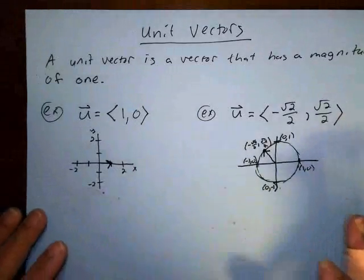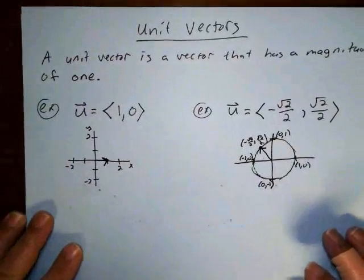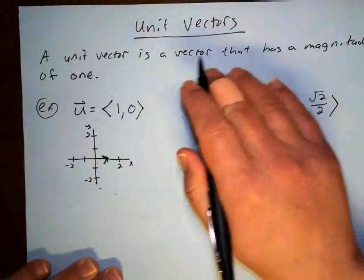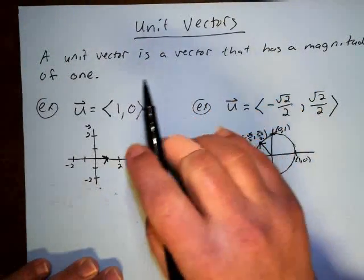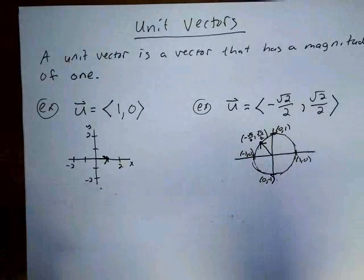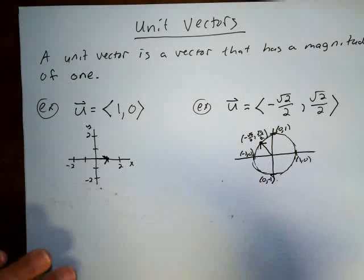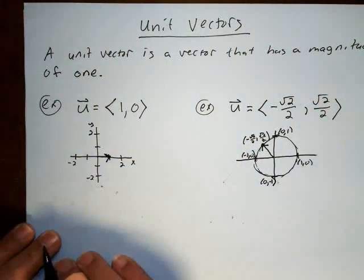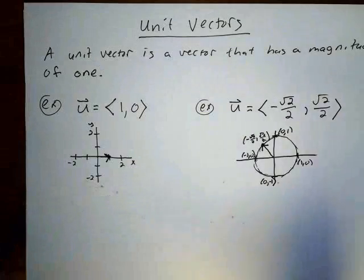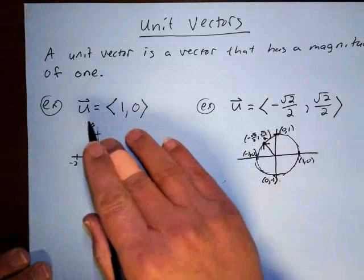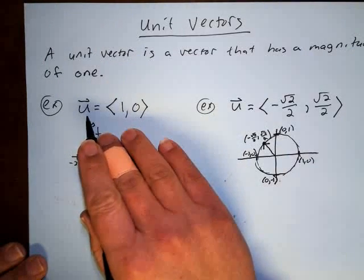In this video we are going to talk about a very important idea that we're going to use in the rest of the section, and this idea is the idea of unit vectors. A unit vector is basically a vector that has a magnitude of one — a vector pointing in any direction but the length of the arrow is one. Oftentimes we'll use u to denote a unit vector within context.